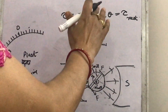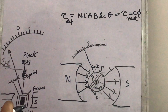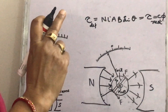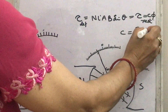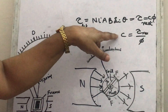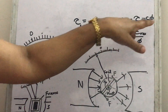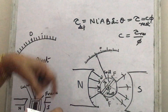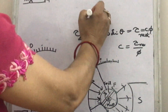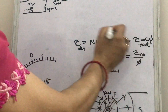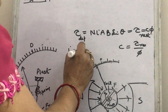At equilibrium, deflecting torque equals restoring torque. The restoring torque is given by Cφ, where C is the torsional constant and φ is the angle of twist in the spring. Torsional constant is defined as restoring torque per unit twist. Setting nIAB sinθ equal to Cφ, we get I = (C / nAB) × (φ / sinθ). The factor C/nAB is constant, so I is proportional to φ/sinθ.